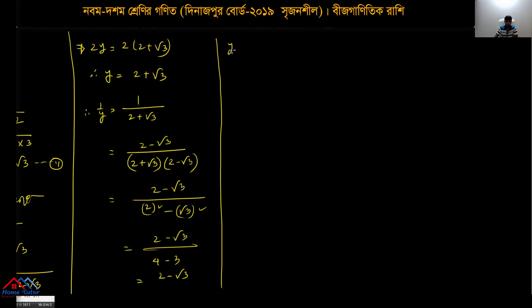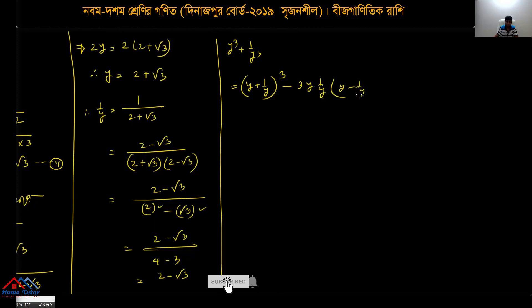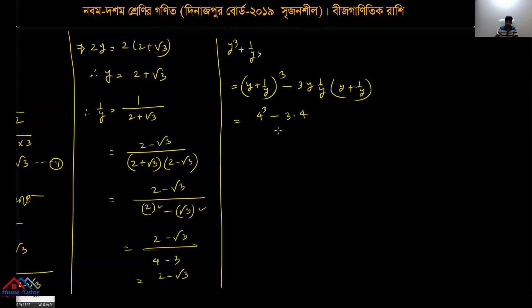Now compute y³ + 1/y³ using the formula (a + b)³ - 3ab(a + b). With y + 1/y = 4, we get 4³ - 3×1×4 = 64 - 12 = 52.